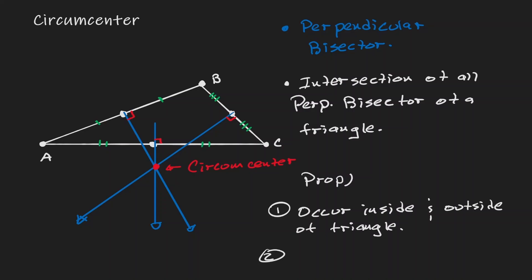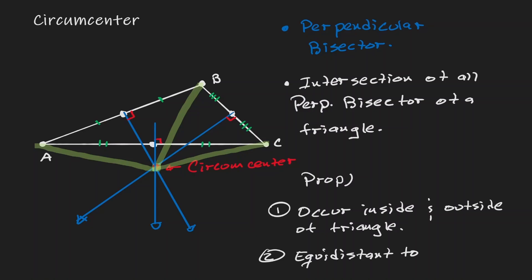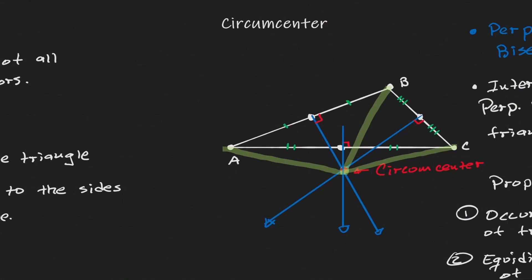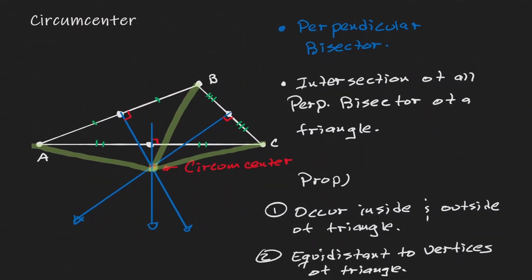The second property is that this point is equidistant to all the vertices of the triangle. Note the difference: for the incenter, it is equidistant to the sides of the triangle; for the circumcenter, it is equidistant to the vertices of the triangle.